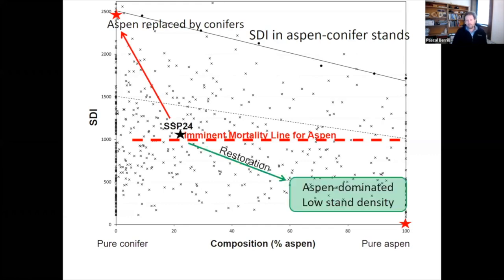This is the direction restoration ought to be taking us. We've developed this concept for our forest manager partners and the agencies — the concept of a green zone as a target or goal. If you can get your stand into this green area you would be well served, because you've reduced stand density, increased the percent of aspen, and reduced conifer. So this is a useful chart for us.